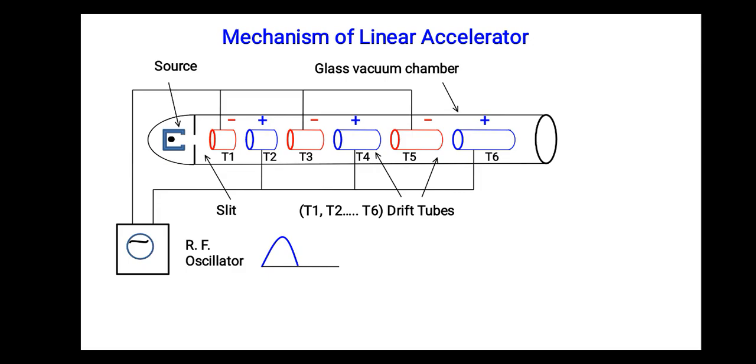Now suppose a positive ion is generated by the source. Since T1 is at negative potential, that positive ion gets attracted towards tube T1.